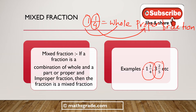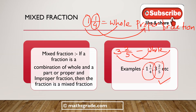In the fraction 3 and 2/5, 3 is the whole number and 2/5 is the proper fraction. So 3 is the whole and 2/5 is the proper fraction.